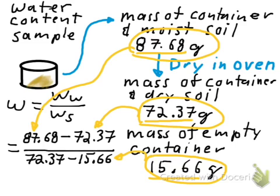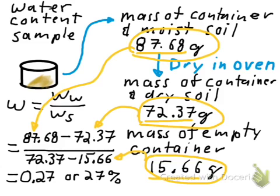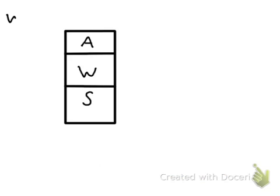Dividing through, we find the water content is 0.27, or 27%. Now I have the total weight and total volume from the cylindrical sample, and I know the water content. So I'm ready to fill out my three-phase diagram. The three-phase diagram has solids, water, and air. I'll put the weights on the left in pounds and the volumes on the right in cubic feet, because when I'm done I want unit weights in pounds per cubic foot.